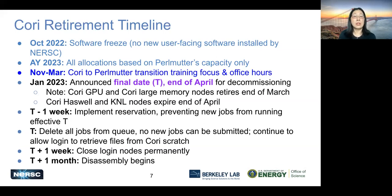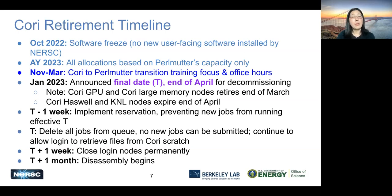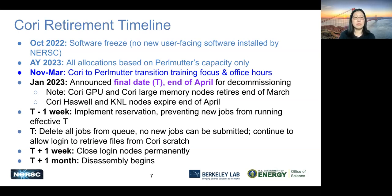At T minus one, we will make a reservation so that new jobs starting from there will not run through T, so every job will finish by T. At T time, we will delete all the jobs still in queue and no new jobs can be submitted. We still allow login for another week, and during that week you can retrieve your files from Cori scratch. The files on all other file systems are still available on Perlmutter or other NERSC systems, so you don't have to do anything special for them. But Cori scratch data — you have one week to retrieve it. Then at T plus one week, all the login nodes will be closed permanently, followed by disassembly of the system.